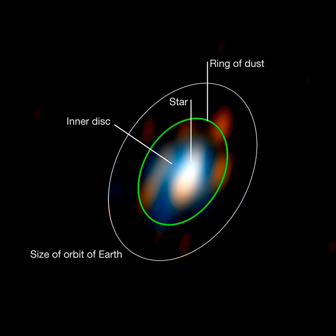Optical interferometers are mostly seen by astronomers as very specialized instruments, capable of a very limited range of observations. It is often said that an interferometer achieves the effect of a telescope the size of the distance between the apertures, but this is only true in the limited sense of angular resolution. The amount of light gathered, and hence the dimmest object that can be seen, depends on the real aperture size, so an interferometer would offer little improvement as the image is dim. The combined effects of limited aperture area and atmospheric turbulence generally limits interferometers to observations of comparatively bright stars and active galactic nuclei.